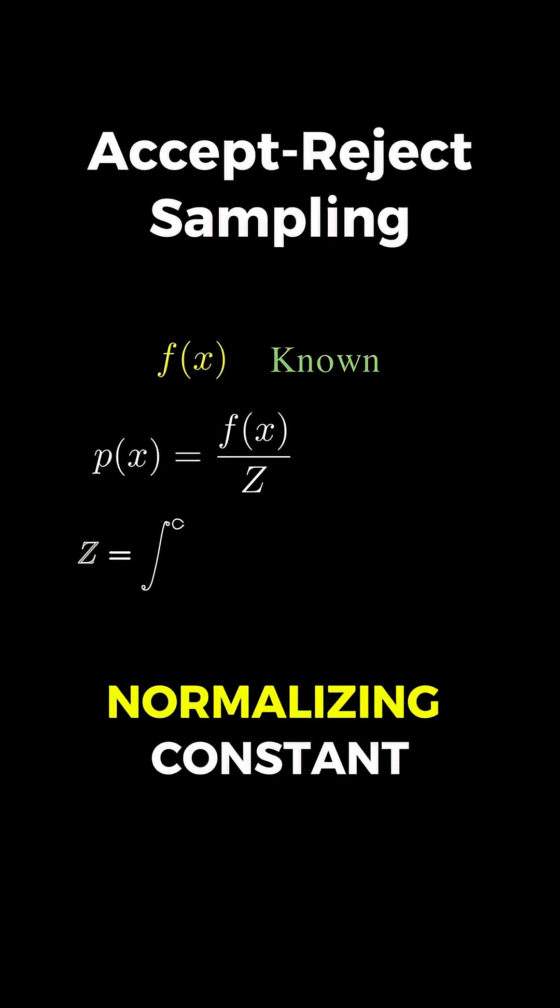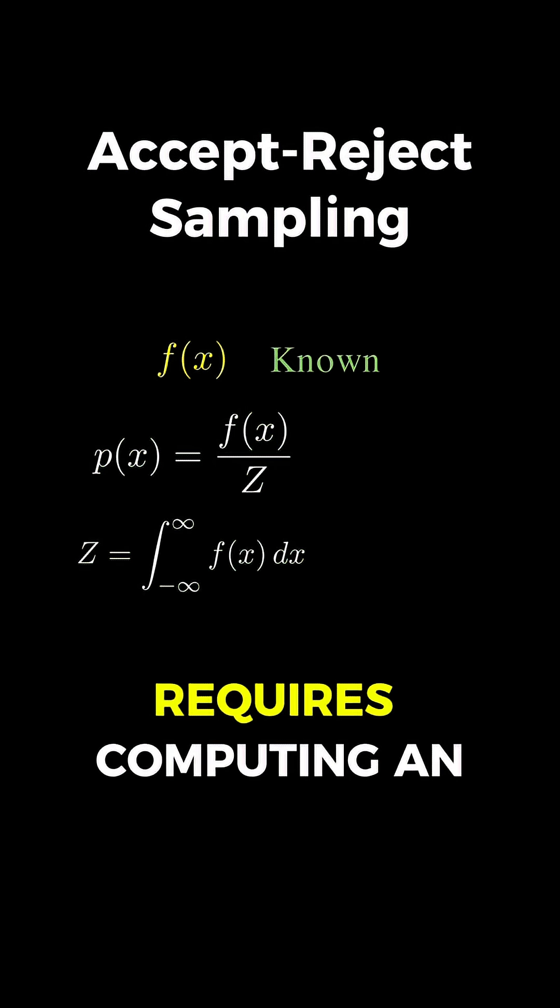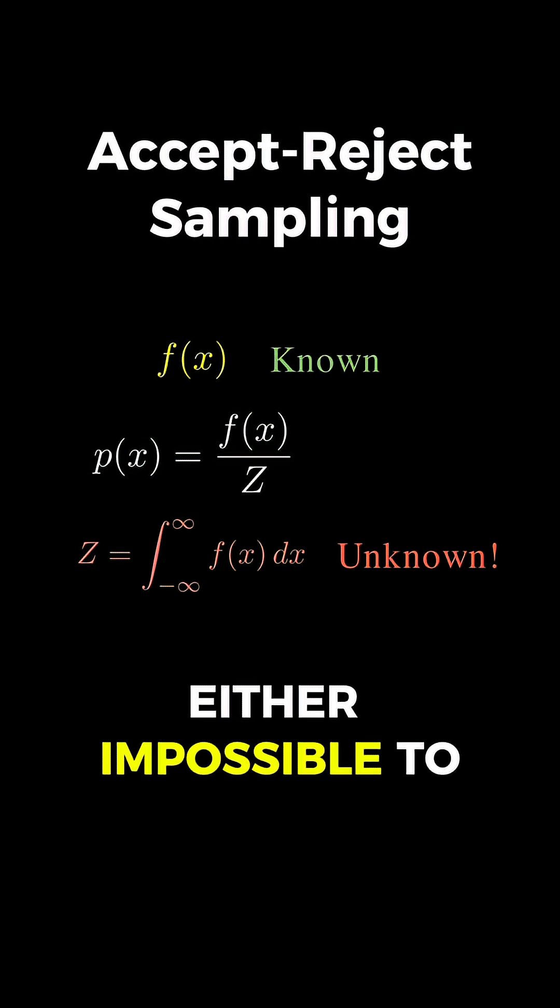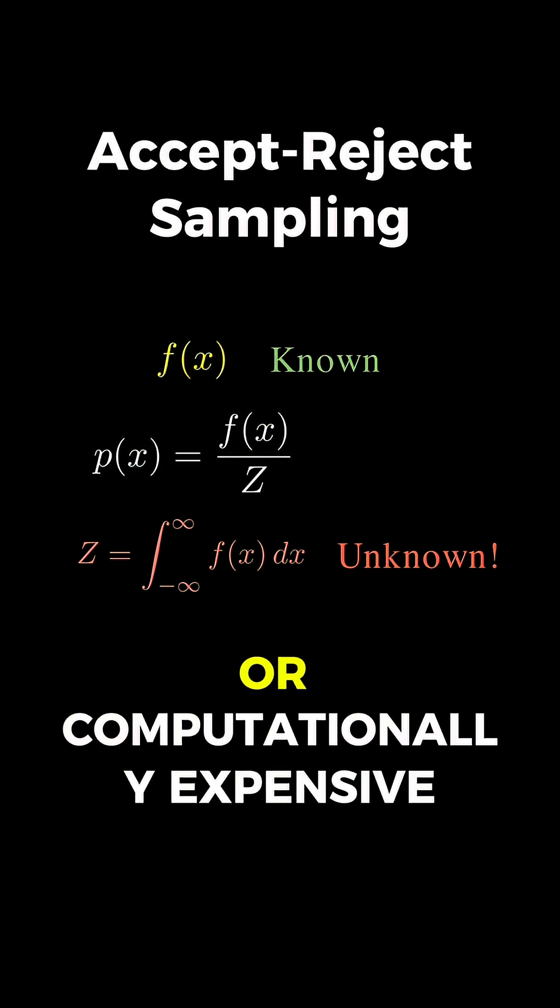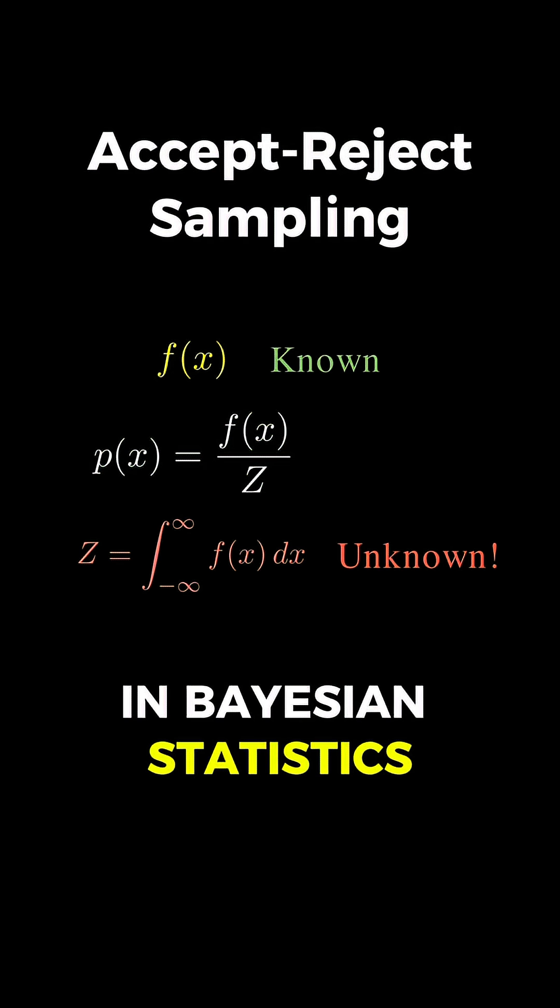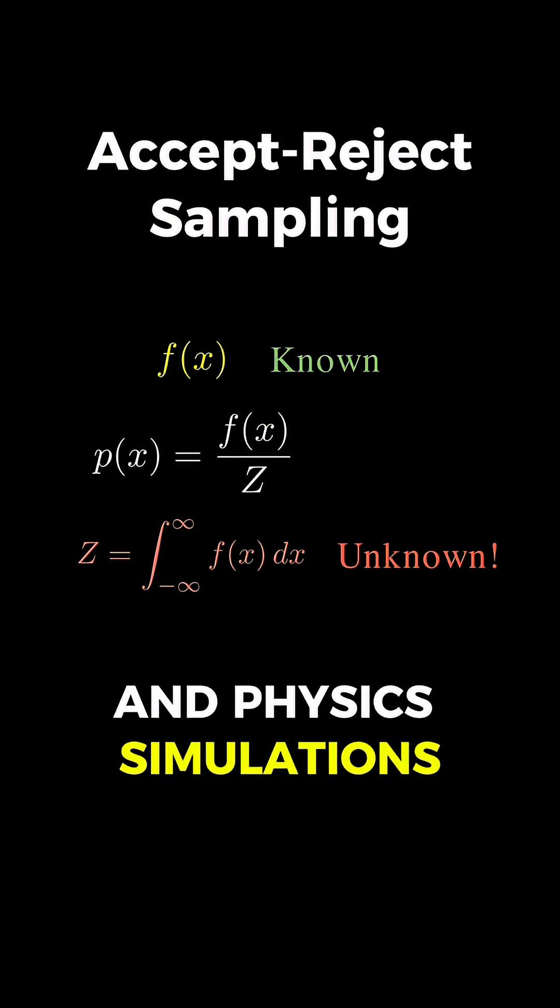But z, this normalizing constant, requires computing an integral from negative infinity to infinity of f dx. And for most real-world distributions, this integral is either impossible to solve analytically or computationally expensive beyond reason, which happens constantly in Bayesian statistics and physics simulations.